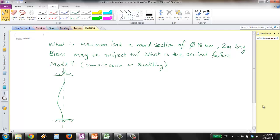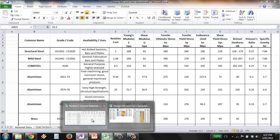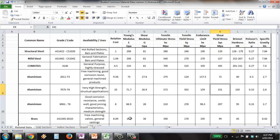To start with, we need to get some material data. For brass, we've got Young's modulus E = 103 gigapascals and tensile yield stress σy = 170 megapascals.